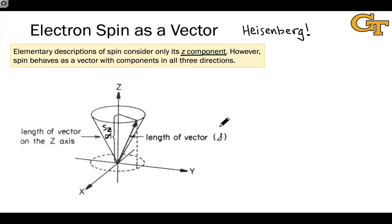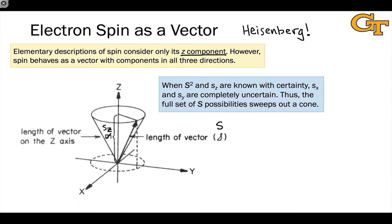When we know s_z, and we also know the total length of the vector, capital S — which is either zero or one for singlet and triplet states respectively — the x and y components of spin are completely uncertain. Geometrically, the x and y components could point in any direction, sweeping out a circle in the x-y plane. Taking into account the known value of s_z means the vector itself sweeps out a cone. The electronic spin vector could be located at any point along this cone, as a consequence of the Heisenberg uncertainty principle.